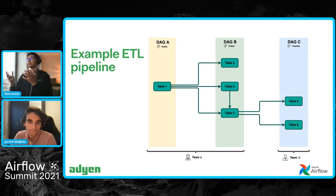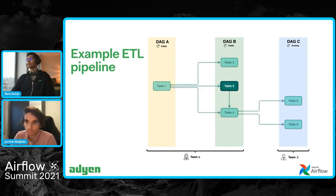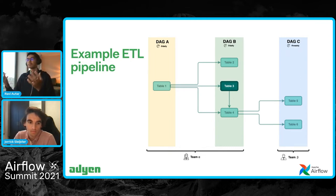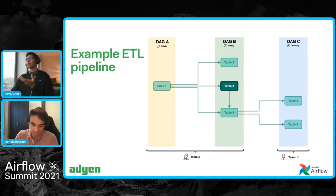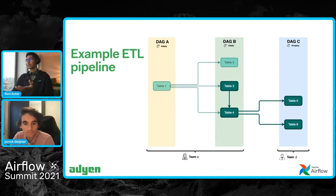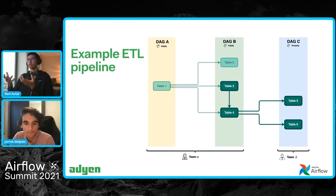This works in a happy flow quite well, but every so often we need to trigger a backfill for one of the tables — say table three — for a full month in June. This can be due to people iterating on table three, or because of corrupted data. But the problem doesn't stop there, because if you backfill table three, you also need to backfill table four in the same DAG, and table five and six in DAG C. This is basically the core of the problem that we set out to solve.